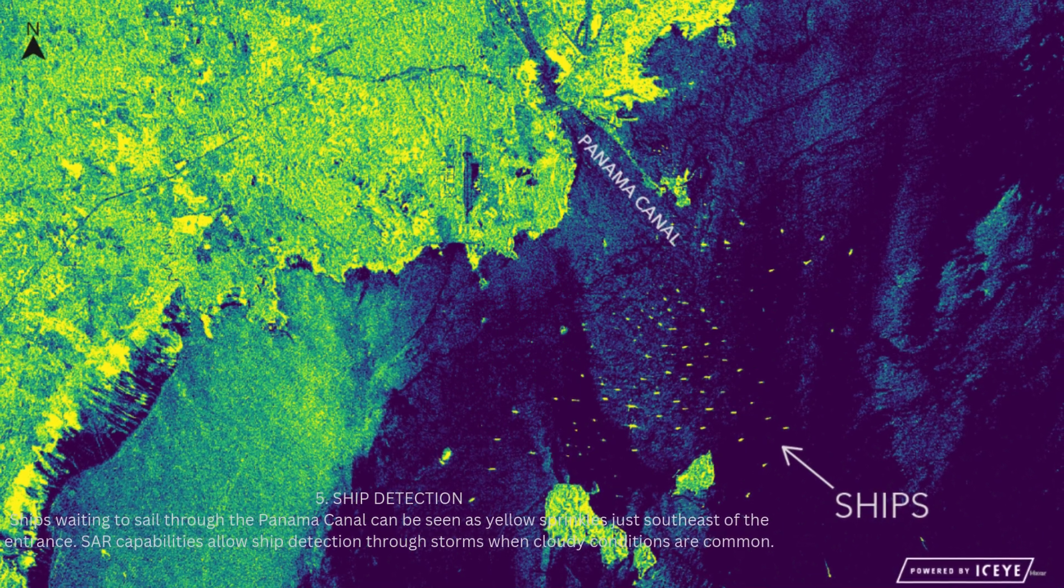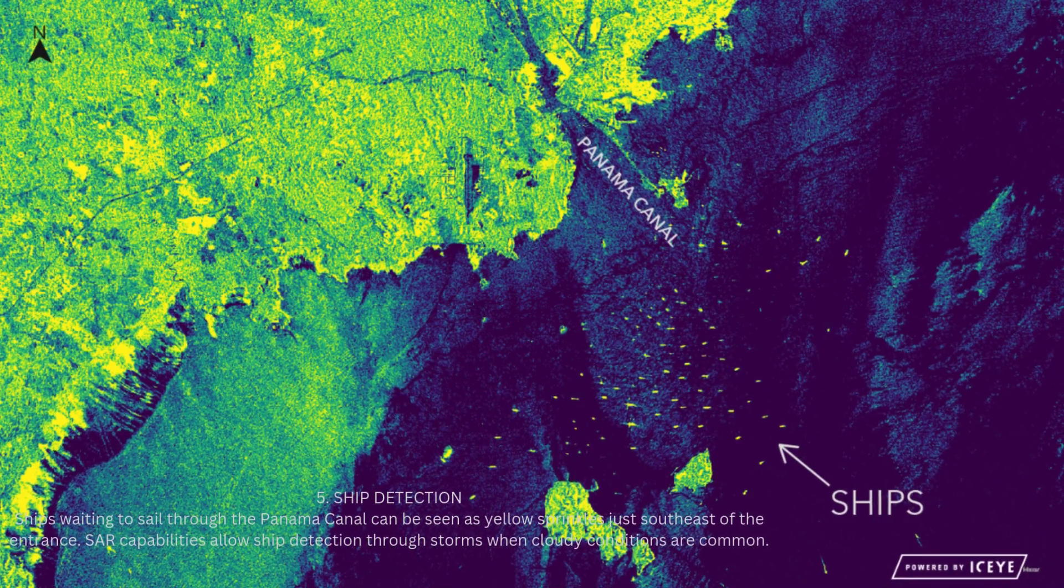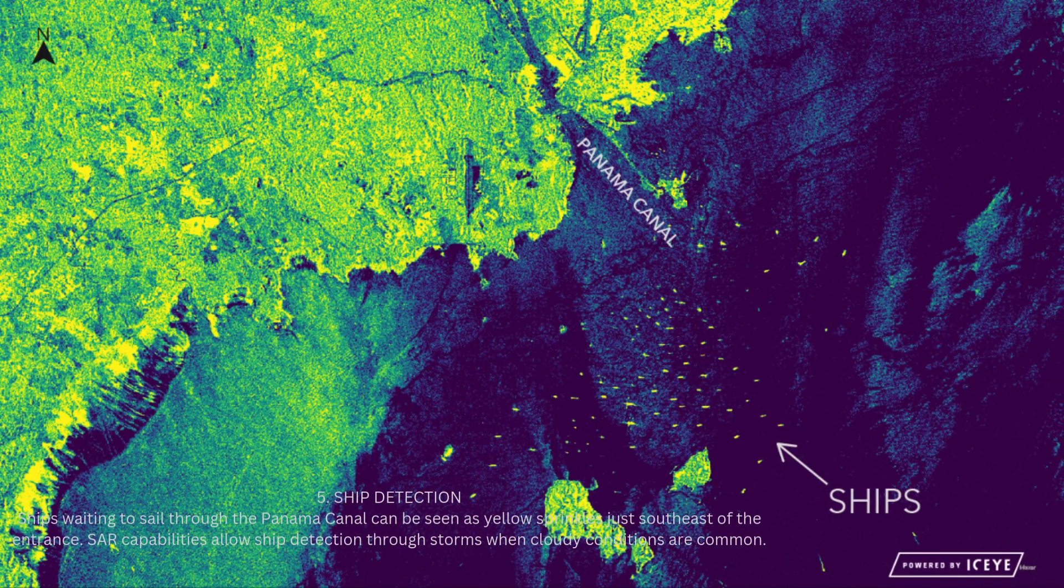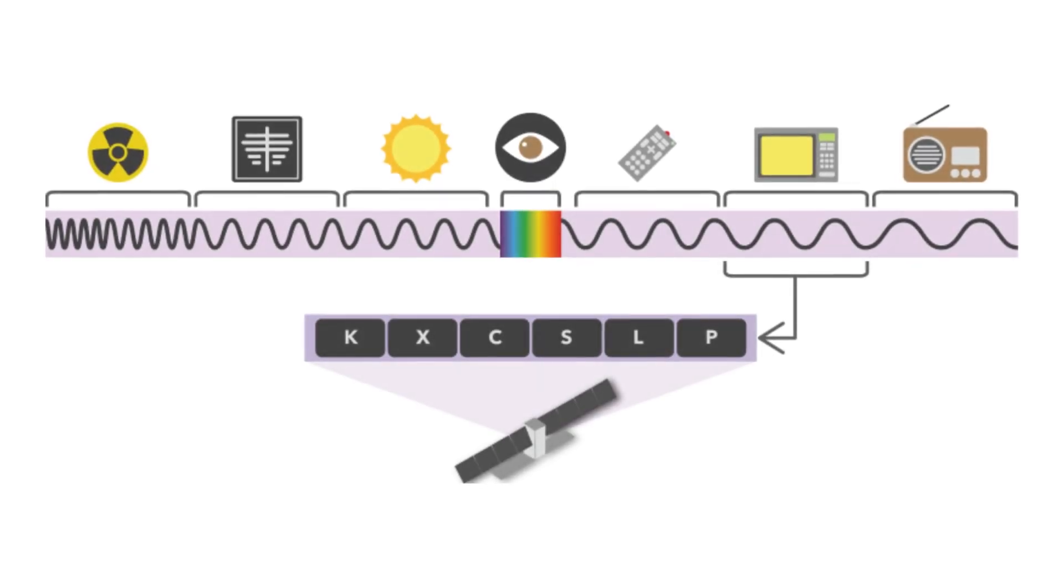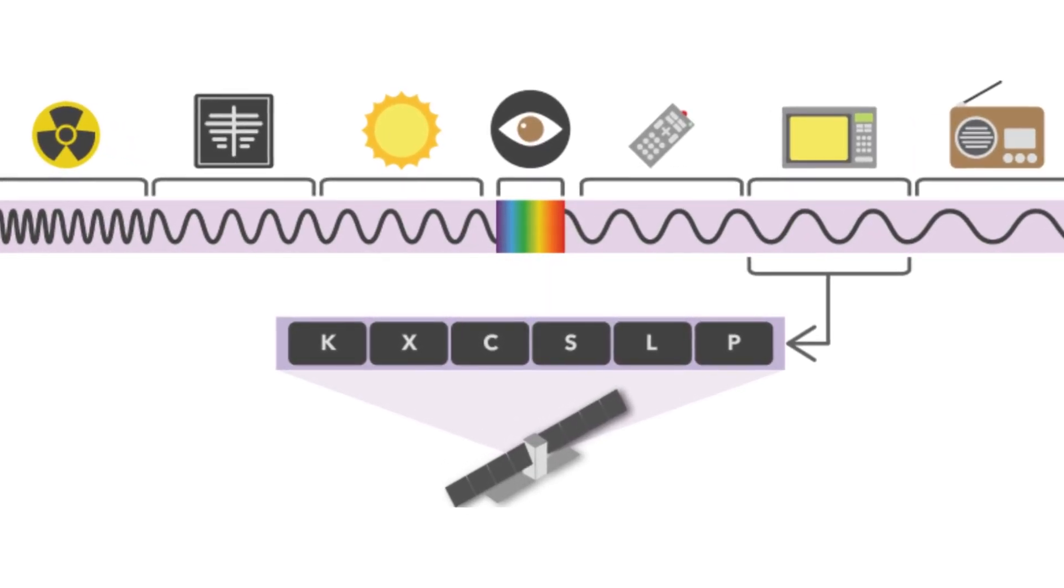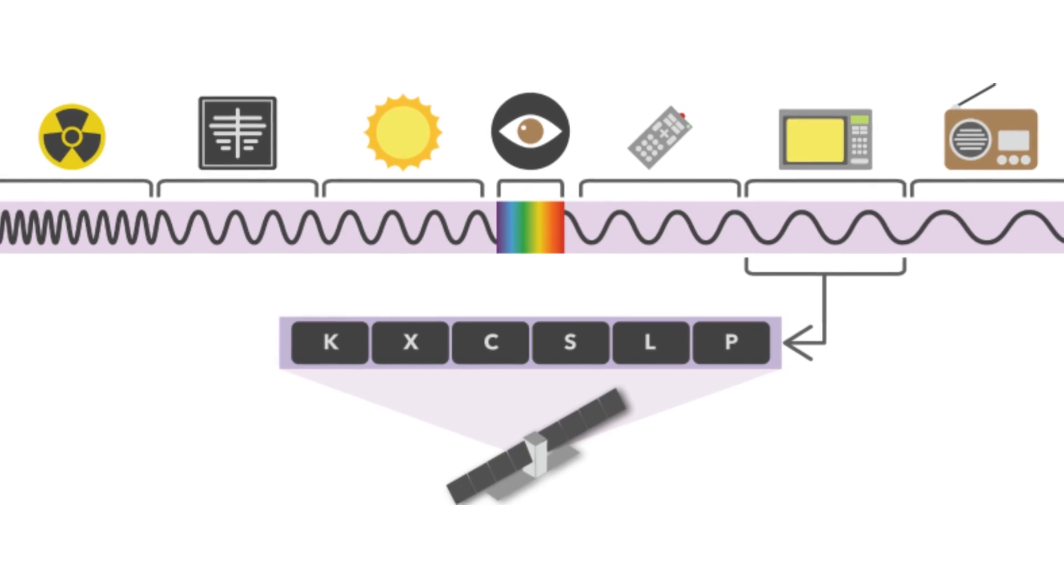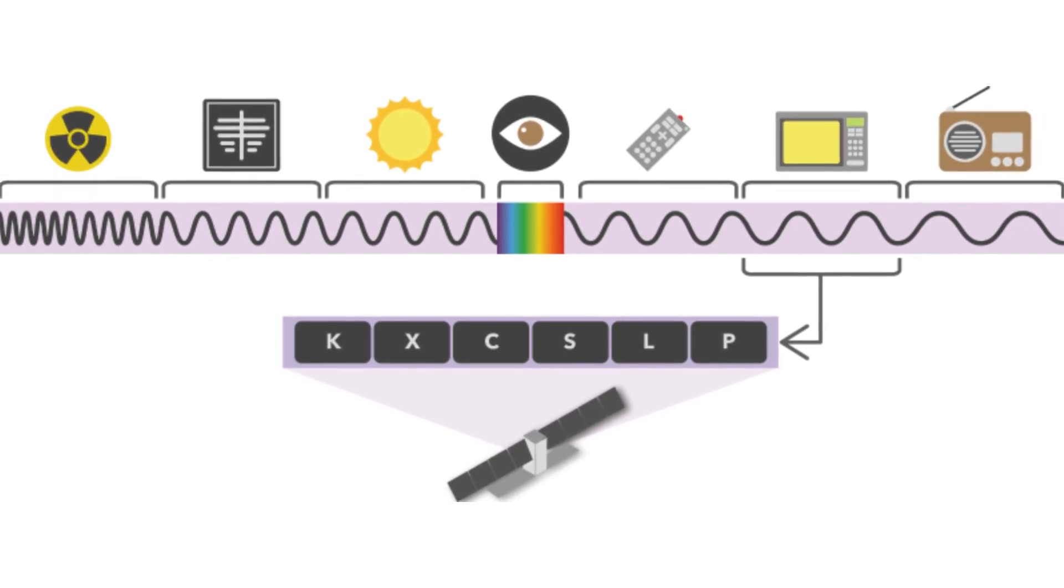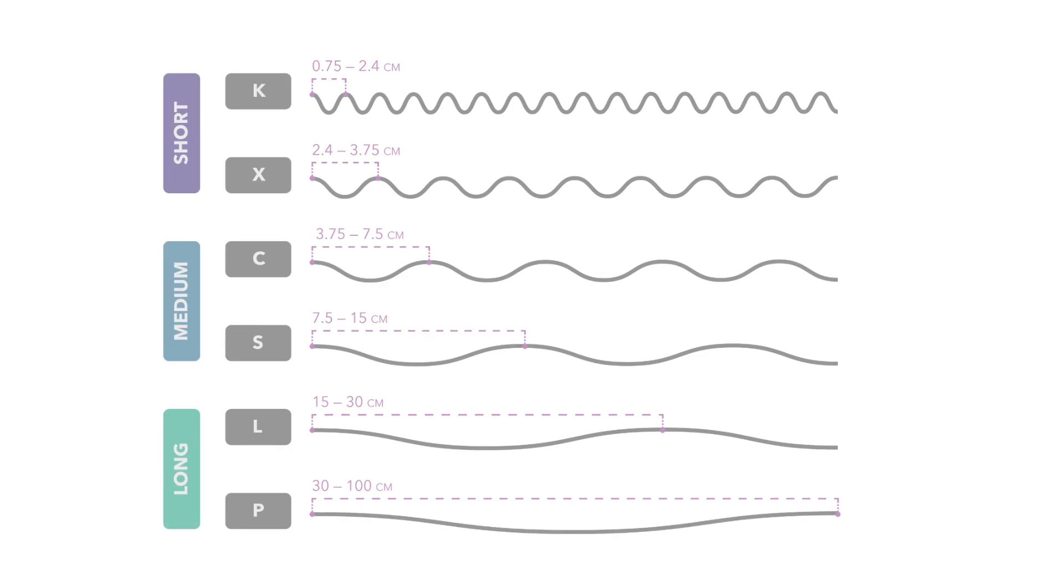Electromagnetic spectrum. Through active sensing, SAR sensor can collect imagery using longer wavelengths compared to an optical sensor. Optical sensor wavelengths are from visible to thermal infrared waves. SAR sensor wavelengths are microwaves from K-band to P-band.